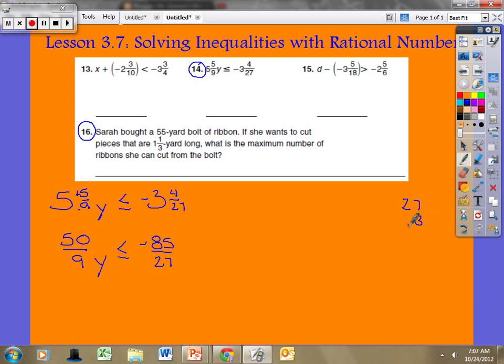Now I'm evaluating for y. Remember, when we multiply or divide by a negative, the inequality symbol flips, but not when the other side is negative. We're not multiplying or dividing by a negative here, so I'll multiply both sides by 9/50, the reciprocal of 50/9. That'll cancel each other out, leaving just y.